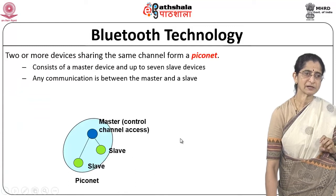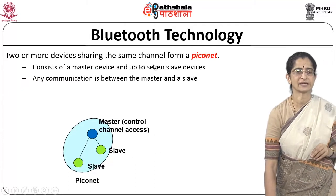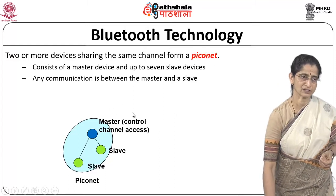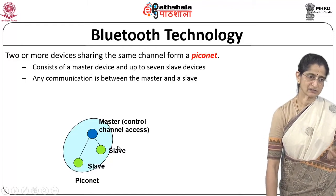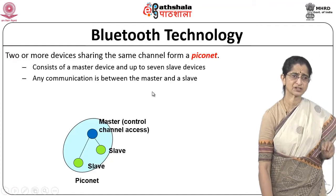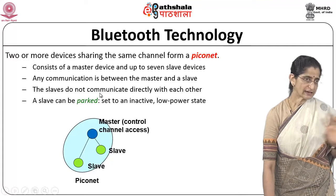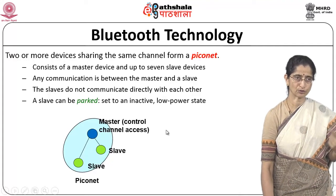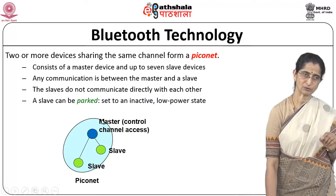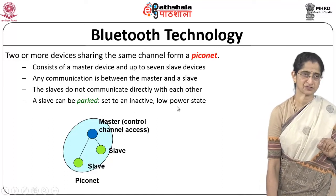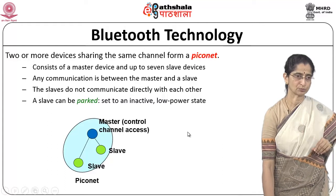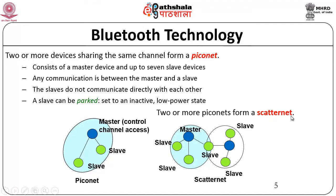In Bluetooth technology, when two or more devices share the same channel to talk to each other, that is called a Piconet. A Piconet normally consists of a master device and slave devices — it can have up to 7 slave devices. Any communication is only between the master and the slave; slaves do not communicate directly with each other, so they must go through the master. A slave can also be in a parked state, set to an inactive low-power state. Two or more Piconets can be interconnected to form what is called a Scatternet.